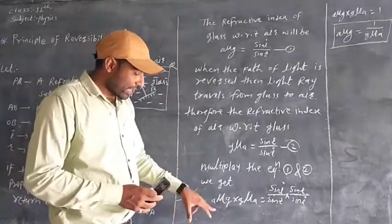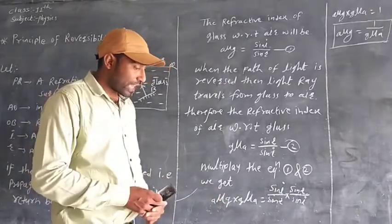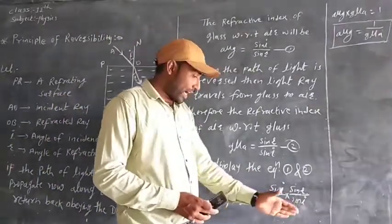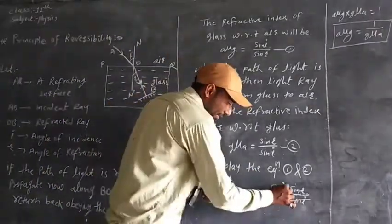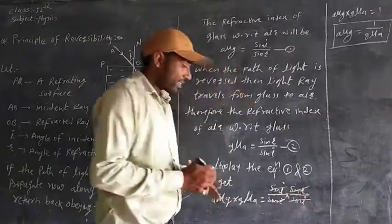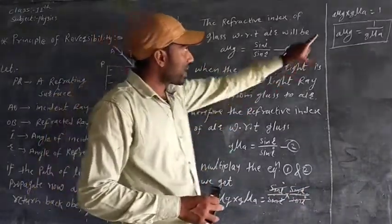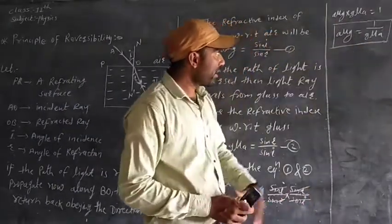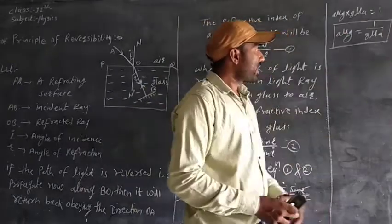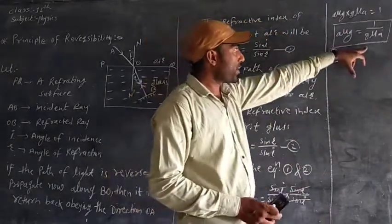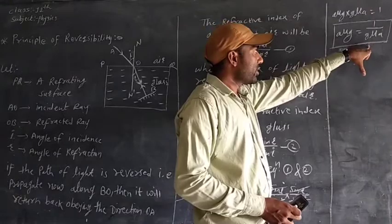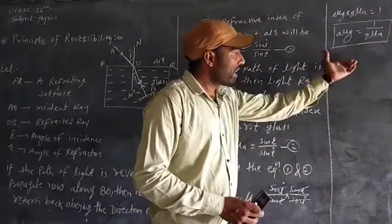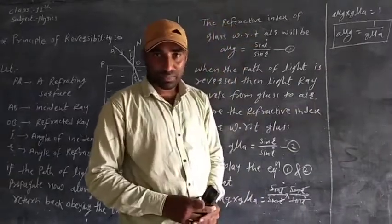So we get: A mu G into G mu A is equal to (sine I / sine R) into (sine R / sine I). Since sine I cancels with sine I and sine R cancels with sine R, the equation becomes A mu G into G mu A is equal to 1. Therefore, A mu G is equal to 1 over G mu A.